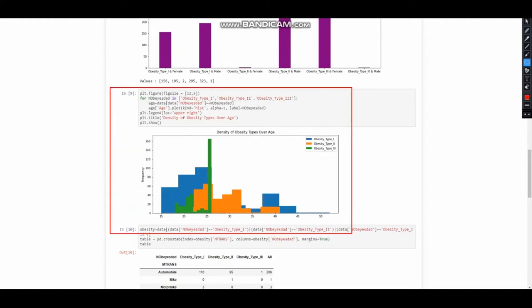In this figure, the weighted obesity distribution by age of all people in our dataset is given. As you can see from the table, there is an increase in the obesity distribution of people between the ages of 19 and 26. The reason for this may be that young people consume more high-calorie foods, do not eat healthy, and spend long hours on technological devices.